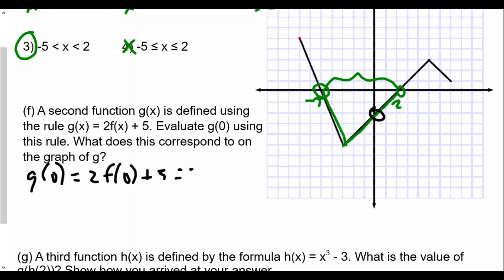So that equals 2 times negative 2 plus 5. Well, g(0) is equal to negative 4 plus 5, or equal to 1. So on the graph of g, that point would be at (0, 1).